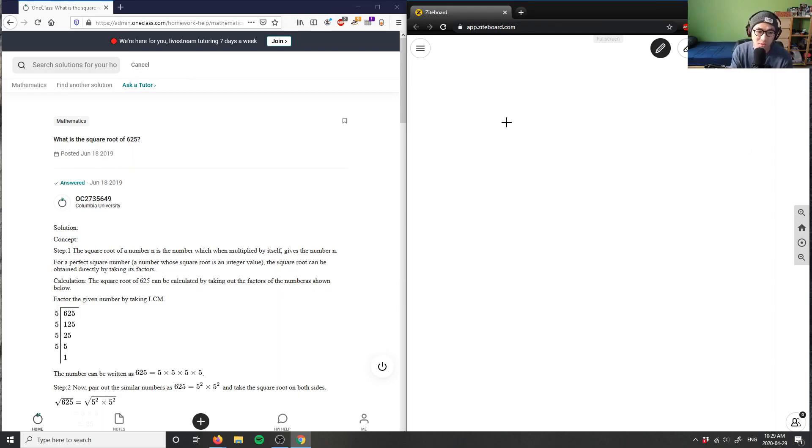Problem 7 asks what is the square root of 625? What we can do is assume we're using simplified radical form.